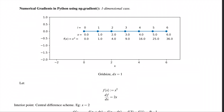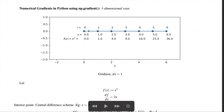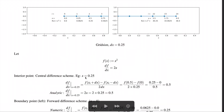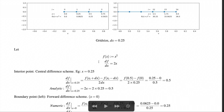What happens if we reduce the grid size? Instead of a step size of 1, let's take a smaller grid size of 0.25. The array x now goes from 0 to 6 in steps of 0.25, and our function f(x) = x² is evaluated at these points. We will examine the three cases again.